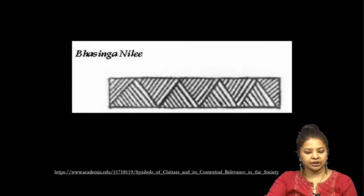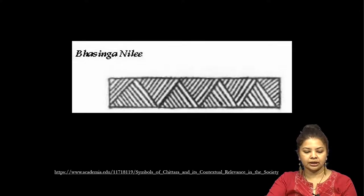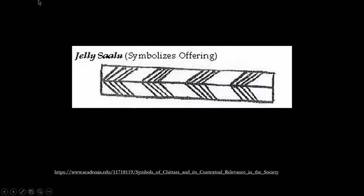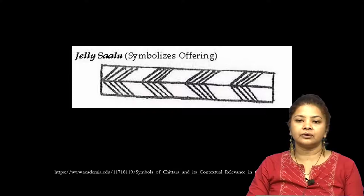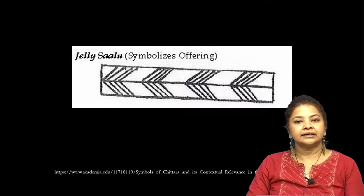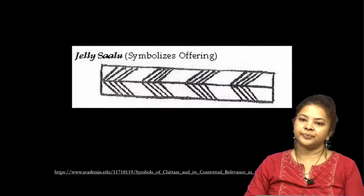This motif is generally used around the bride and the bridegroom for decoration. This is Jalisa, which symbolizes offering. This type of strap is shown around the bride and bridegroom when the wedding scene is depicted. It symbolizes offering and is also a symbol of purity.